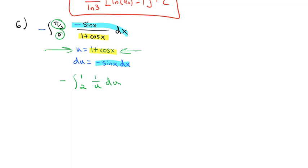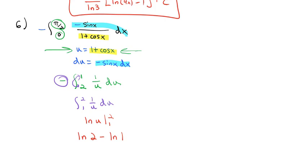Switching the limits of integration and changing the sign gives the integral from 1 to 2 of 1/u du. Evaluating: natural log of u from 1 to 2 equals ln(2) − ln(1). Since ln(1) = 0, the final answer is simply ln(2).